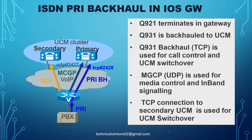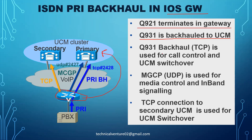For ISDN PRI backhaul in an IOS gateway, Q.921 terminates on the gateway. If a call arrives, the Q.931 is backhauled to the primary CUCM — this is PRI backhauling. Q.931 backhaul is used mainly for call control and CUCM switchover. If the primary server is not available, it switches over to the secondary one. MGCP is used for media control and inband signaling, and the TCP connection to the secondary CUCM is used for the switchover.